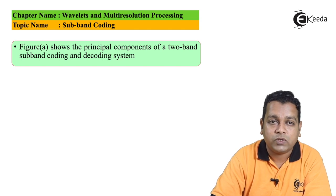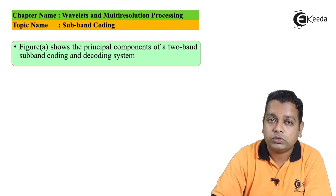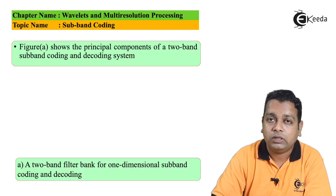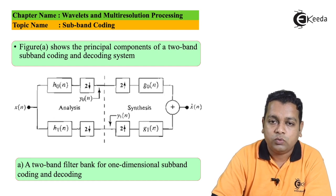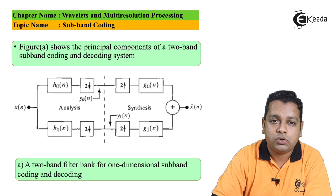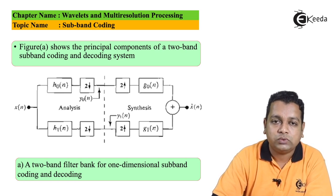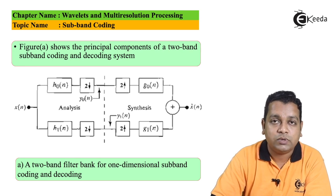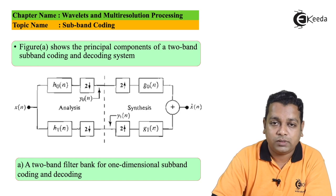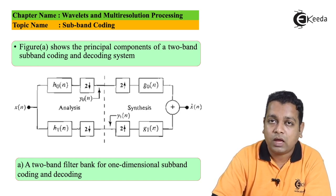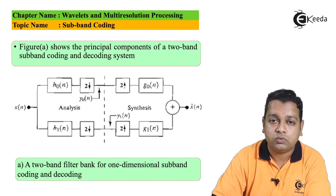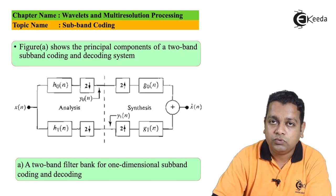Figure (a) shows the principal components of a two-band subband coding system, and on the right-hand side the decoding system. A two-band filter bank for one-dimensional subband coding and decoding is shown. The left-hand side input is a one-dimensional discrete signal x(n), fed to two branches. The two filters have transfer functions h₀(n) and h₁(n), followed by down-samplers with decimation factor D equal to 2. This portion from input to the down-sampler is called the analysis filter bank.